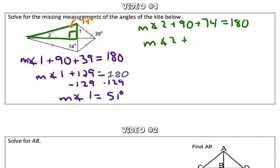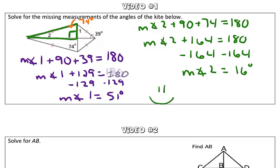We're going to combine our like terms. So the measure of angle 2 plus 164 is equal to 180. Using inverse operations, we're going to subtract 164 from both sides. So the measure of angle 2 is equal to 16 degrees. Nice work!